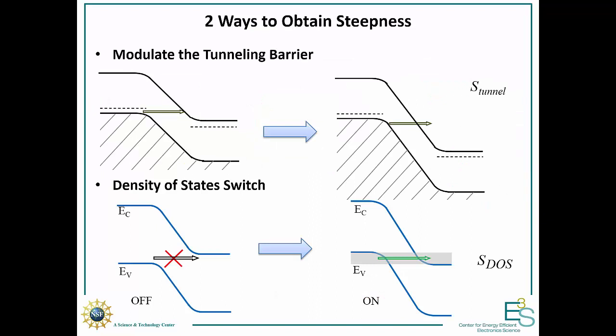We still need to optimize the sub-threshold swing as well. There are two mechanisms: we can control the thickness of the tunneling barrier, or we can align the bandedge density of states. I want to quantify both. I'll define S_tunnel as how many millivolts it takes to get a decade change in tunneling probability. We can also define a steepness for the bandedge density of states — how quickly they fall off — essentially millivolts per decade change in the density of states.